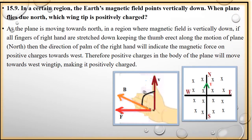Question number 15.9: In a certain region, the earth's magnetic field points vertically down. When plane flies due north, which wing tip is positively charged? Students, ab is situation mein, earth ki jo magnetic field hai, wo downward direction mein hai, inward direction mein hai. Aur ek plane move kar raha hai north direction mein with velocity v. Aap ko ye karna hai ke plane ke kis wing pe positive charge hoga.